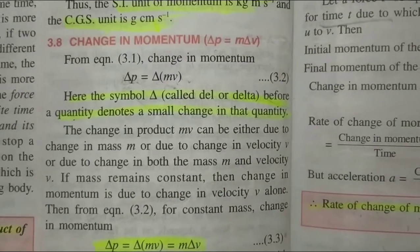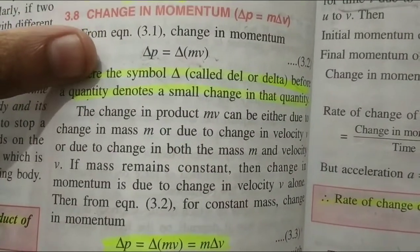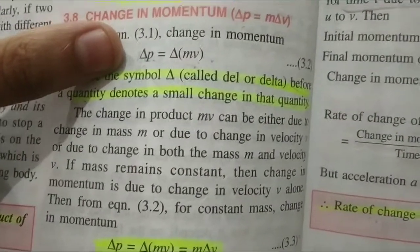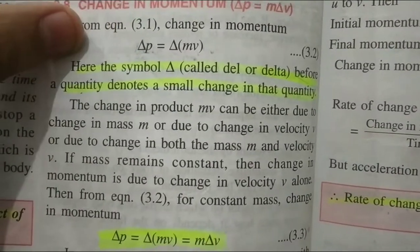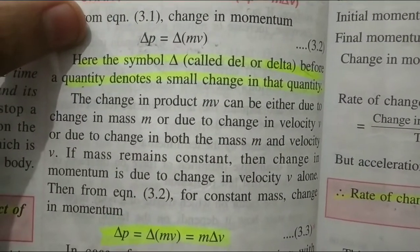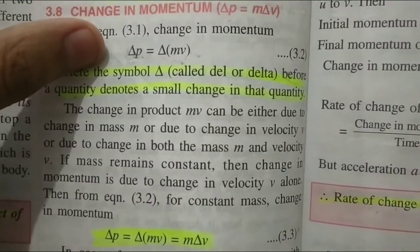Next is change in momentum. Delta p is equal to delta mv. This symbol is called delta that denotes a small change in that quantity. This means that if there is a change in mass or velocity, then the linear momentum will also change. It is logical.